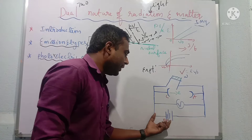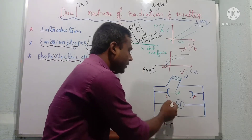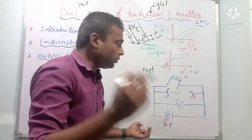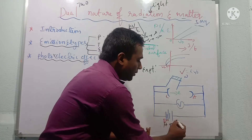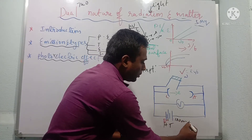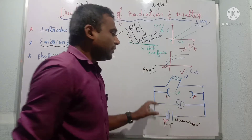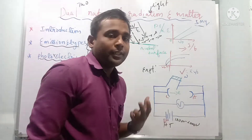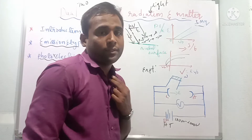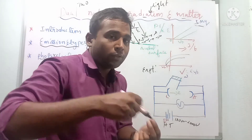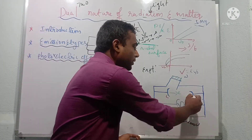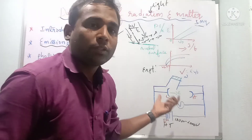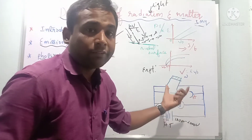For the experimental setup of the photoelectric effect: we have a high-tension battery, a cathode, an anode, and a quartz window. We supply approximately 1000–2000 volts. The cathode is made of photosensitive material like zinc sulfide, which easily emits electrons. The anode collects the electrons — these are the major functions in this experimental arrangement.